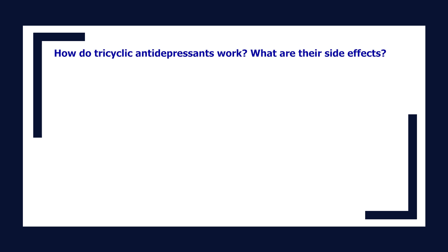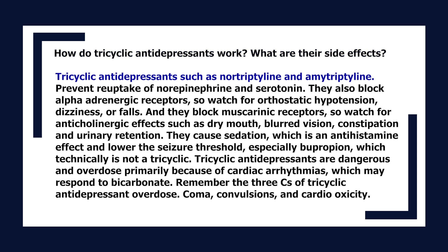How do tricyclic antidepressants work and what are their side effects? Tricyclic antidepressants such as nortriptyline and amitriptyline prevent reuptake of norepinephrine and serotonin. They also block alpha-adrenergic receptors — watch for orthostatic hypotension, dizziness, or falls. They block muscarinic receptors — watch for anticholinergic effects such as dry mouth, blurred vision, constipation, and urinary retention. They cause sedation (antihistamine effect) and lower the seizure threshold, especially bupropion (which is technically not a tricyclic). Tricyclics are dangerous in overdose primarily because of cardiac arrhythmias, which may respond to bicarbonate. Remember the three C's of tricyclic overdose: coma, convulsions, and cardiotoxicity.